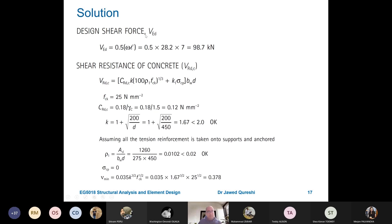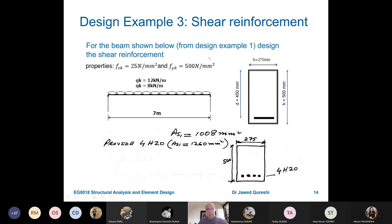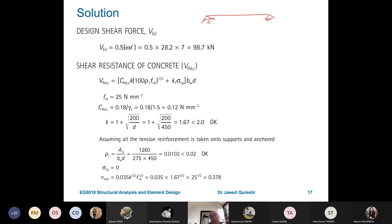Design shear force is simply 0.5 WL. How do we determine it? Simply, it has been taken from here. GK is 12 and QK is 8. This is what is given to us. GK is 12 kN per meter and QK is 8 kN per meter and the length of the span is 7.